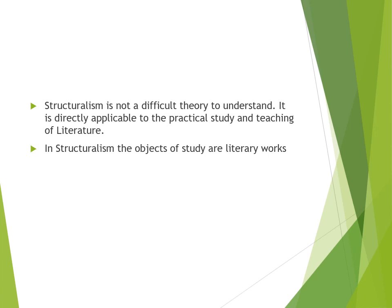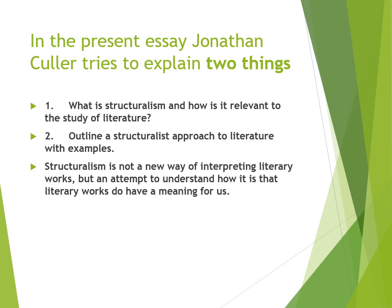In this essay, Culler tries to explain two things. First, he explains what is structuralism and how it is relevant to the study of literature. Then he explains what is a structuralist approach to literature with some examples. He says that structuralism is not a new way of interpreting literary works but it is an attempt to understand how we get meaning out of these literary works.